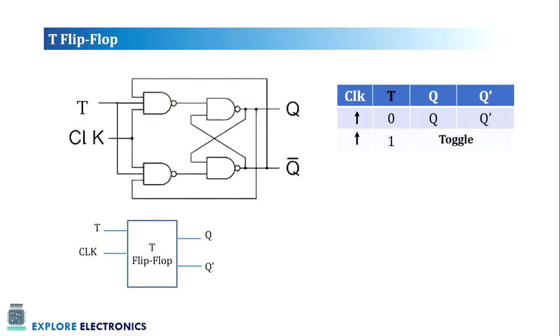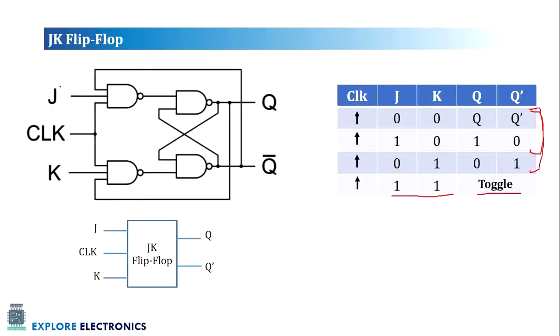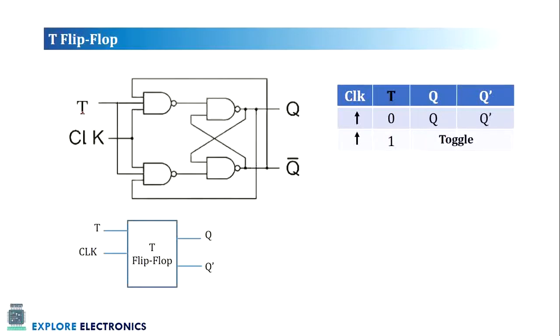Next, we have T flip-flop. This T flip-flop is the modified version of JK flip-flop. If J and K are connected together, it becomes T flip-flop.